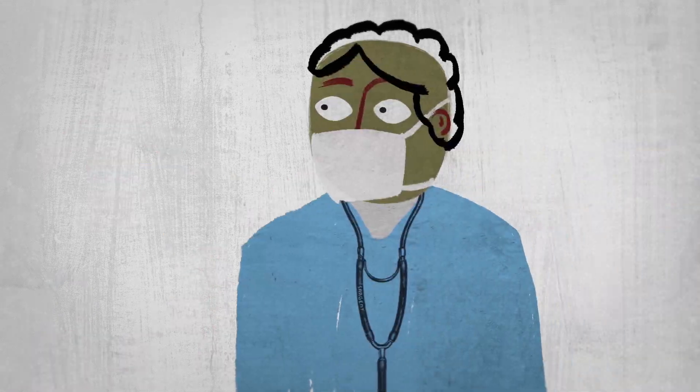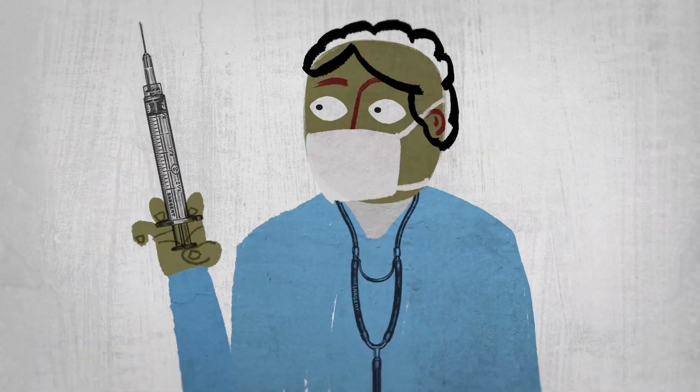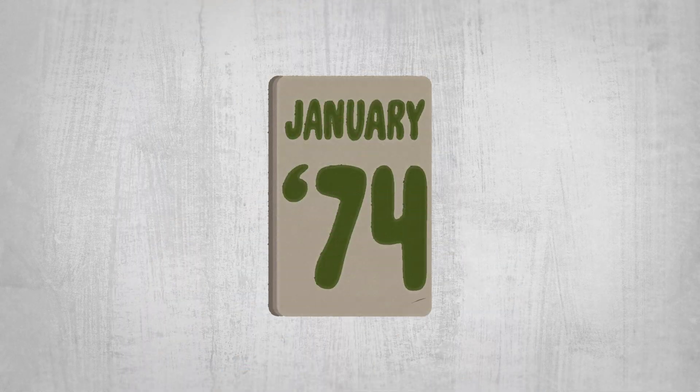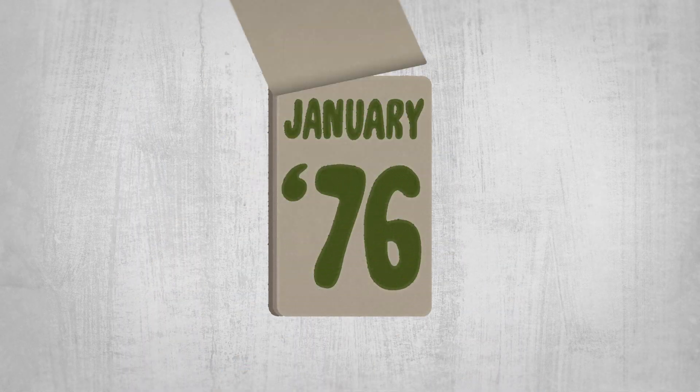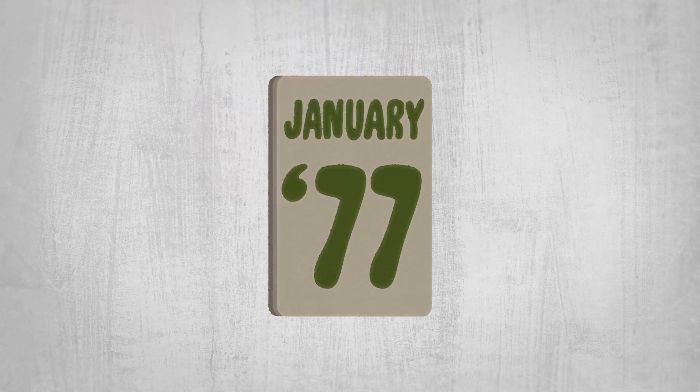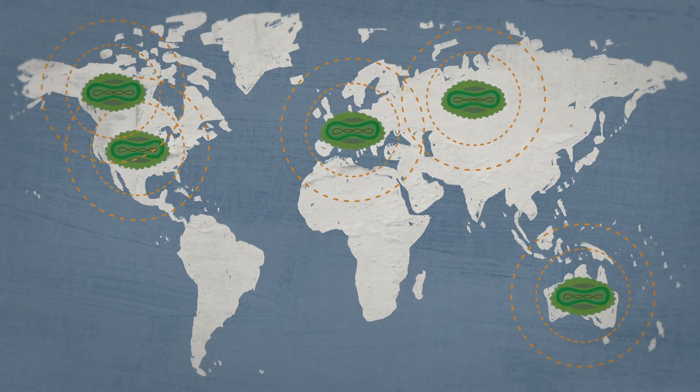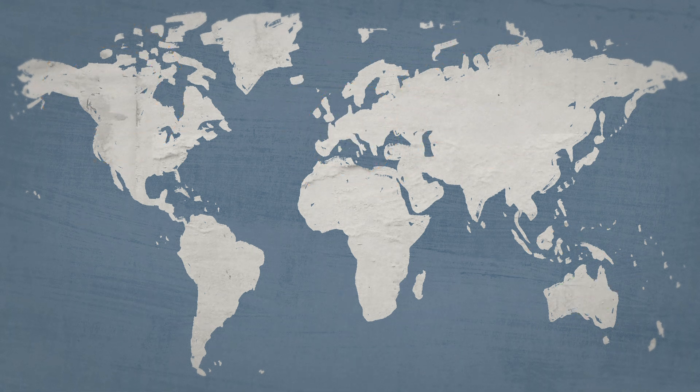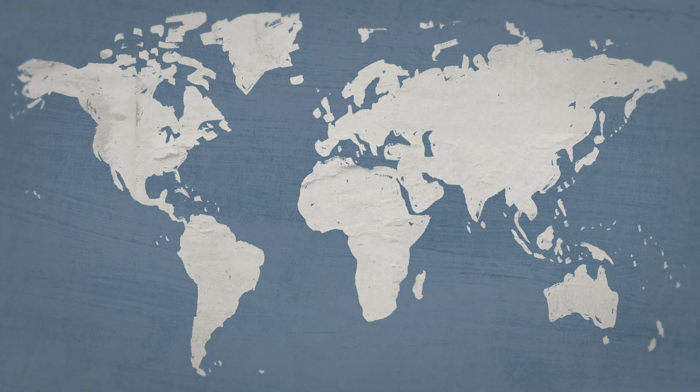Third, the availability of a smallpox vaccine that provided immunity for five to ten years in a single dose meant that there was an effective intervention to stop the virus from spreading. And finally, the initial success of several countries in eliminating the disease within their borders served as a proof of principle for its eradication worldwide.